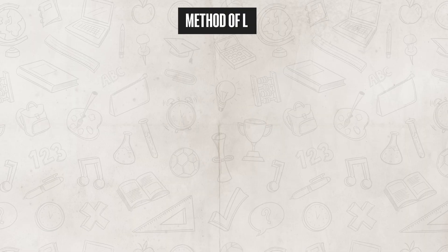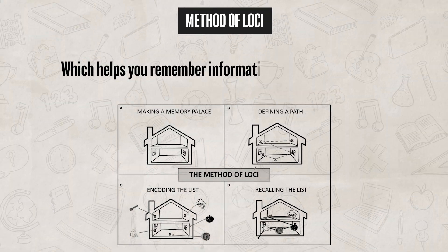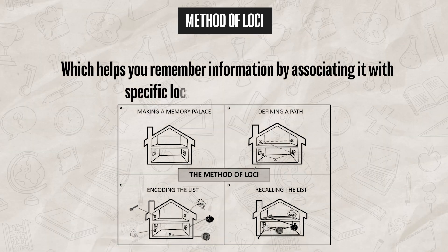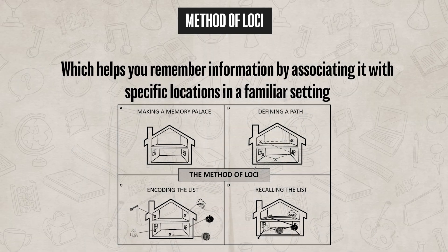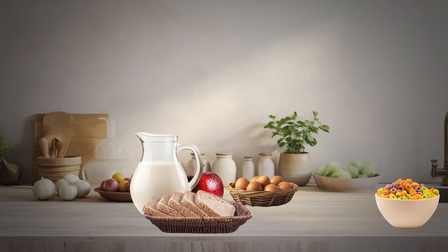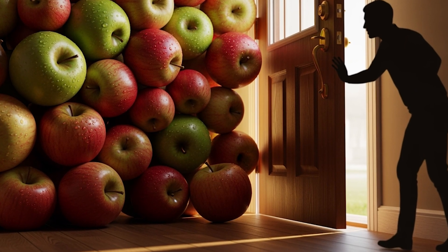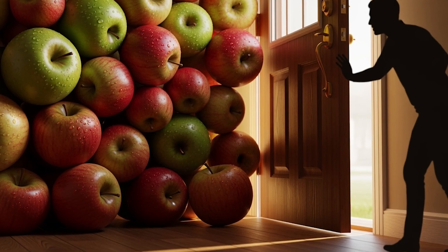One type of mnemonic device to be familiar with is the method of loci, which helps you remember information by associating it with specific locations in a familiar setting. For example, let's say you're trying to memorize a grocery list: apples, milk, bread, eggs, and cereal.